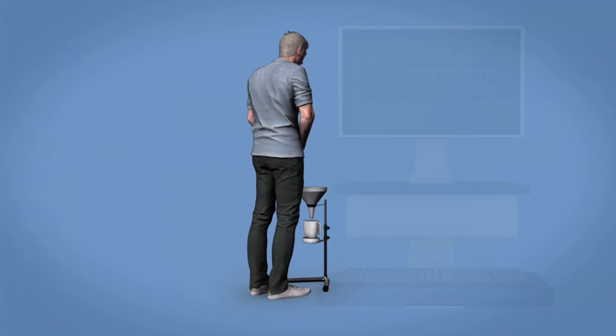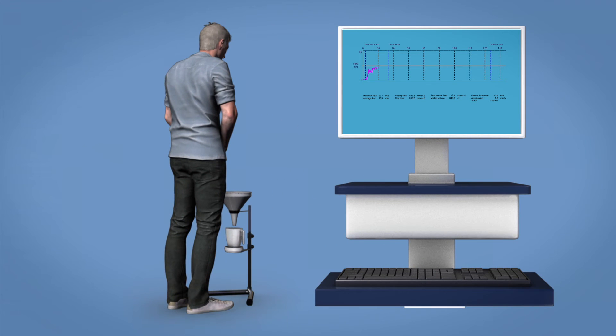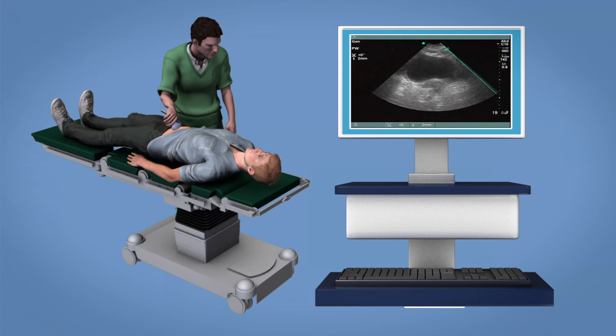Your doctor might begin with uroflowmetry. You will be asked to urinate on a special toilet in private. This toilet will measure the flow of your urine. Afterwards, an ultrasound of your bladder is made to see how well it emptied.